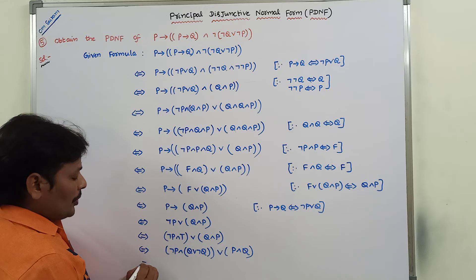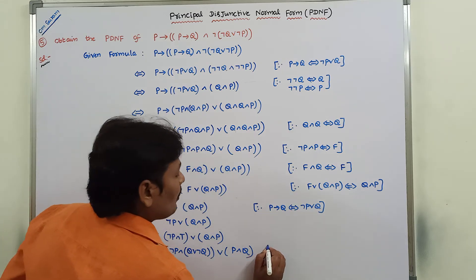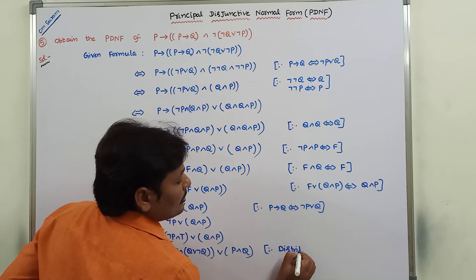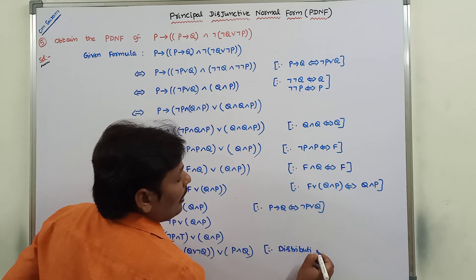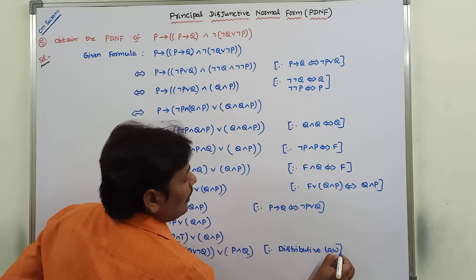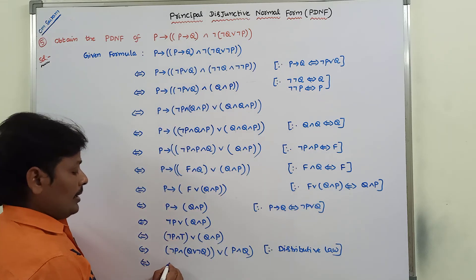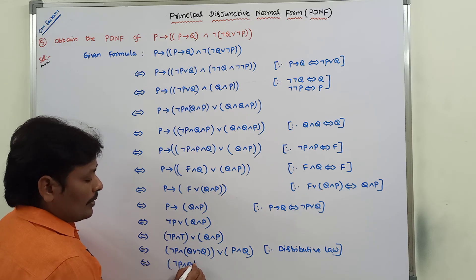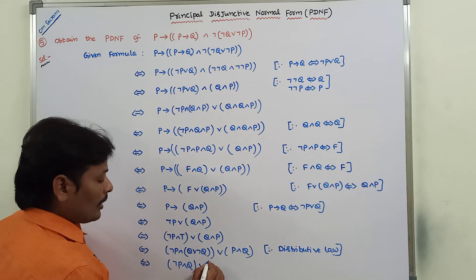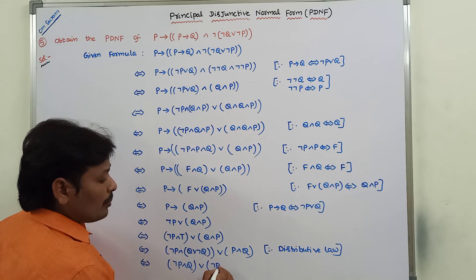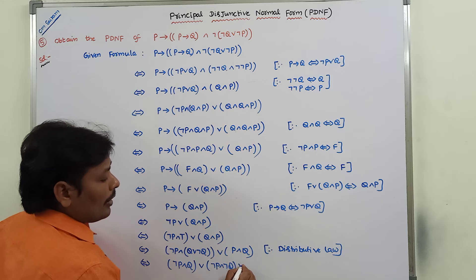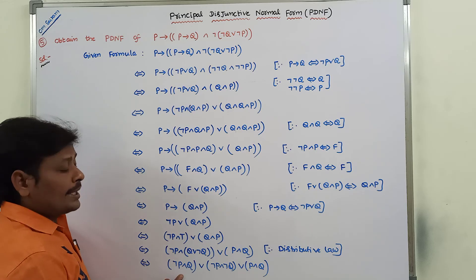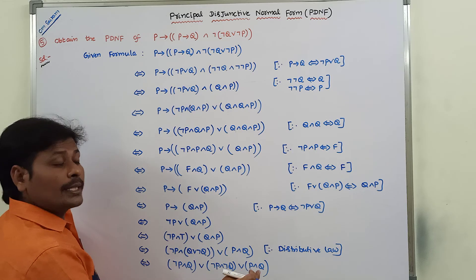Now apply the distributive law. The missing term in the first term (negation P) is Q. So it can be written as (Q or negation Q). Applying the distributive law gives us: negation P and Q, negation P and negation Q, and P and Q as the three main terms.